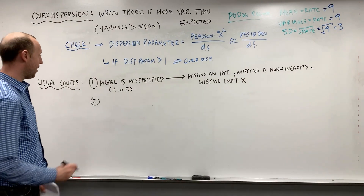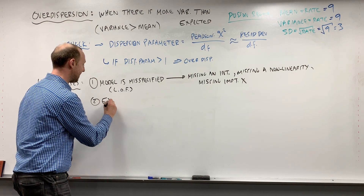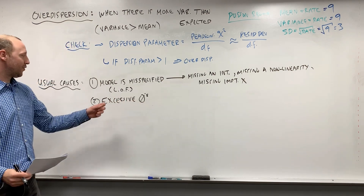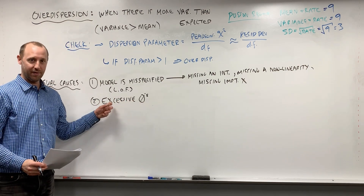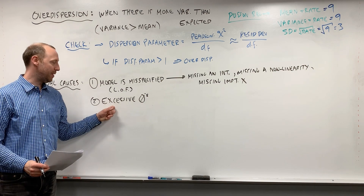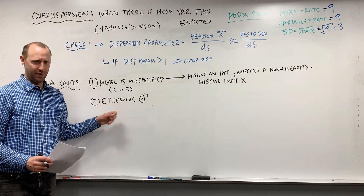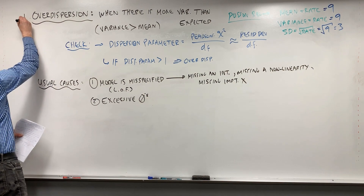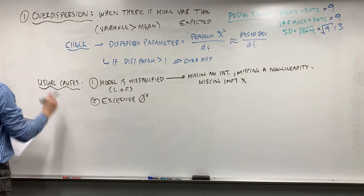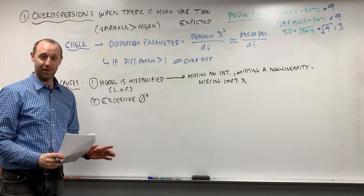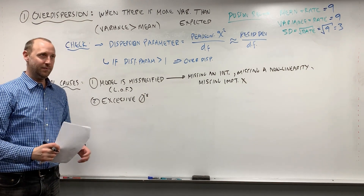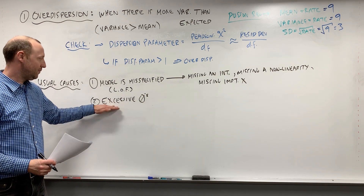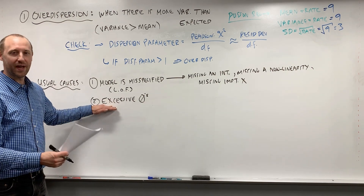A second really common cause of overdispersion is excessive zeros — for a large number of people, the event simply did not occur. This is actually also the second common problem encountered with Poisson regression, which we'll explore next: excessive zeros, what they are, how to identify them, and what solutions exist for addressing them.